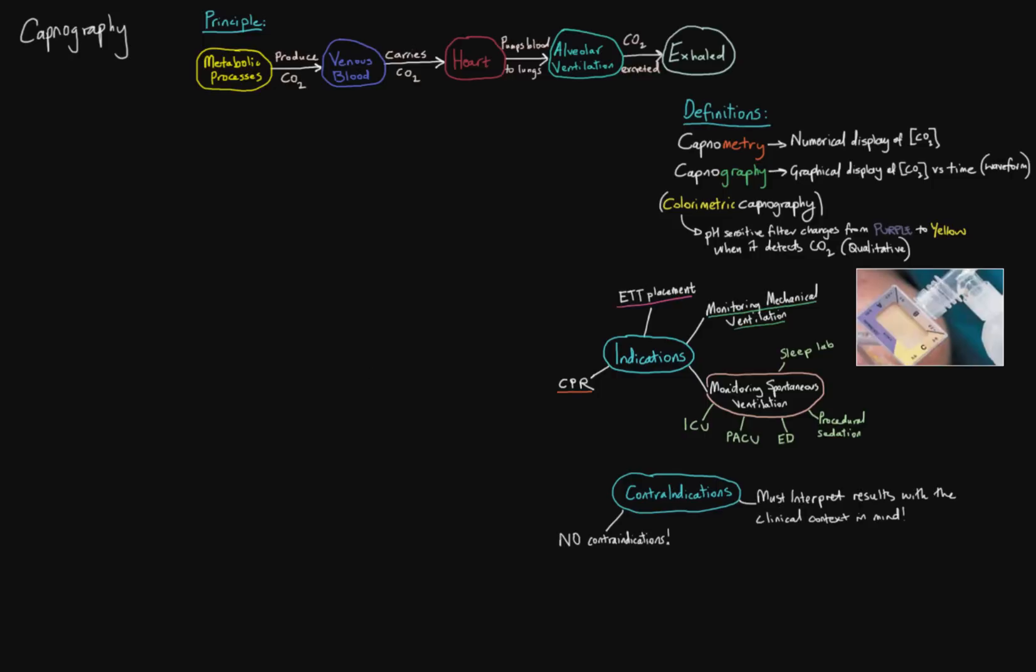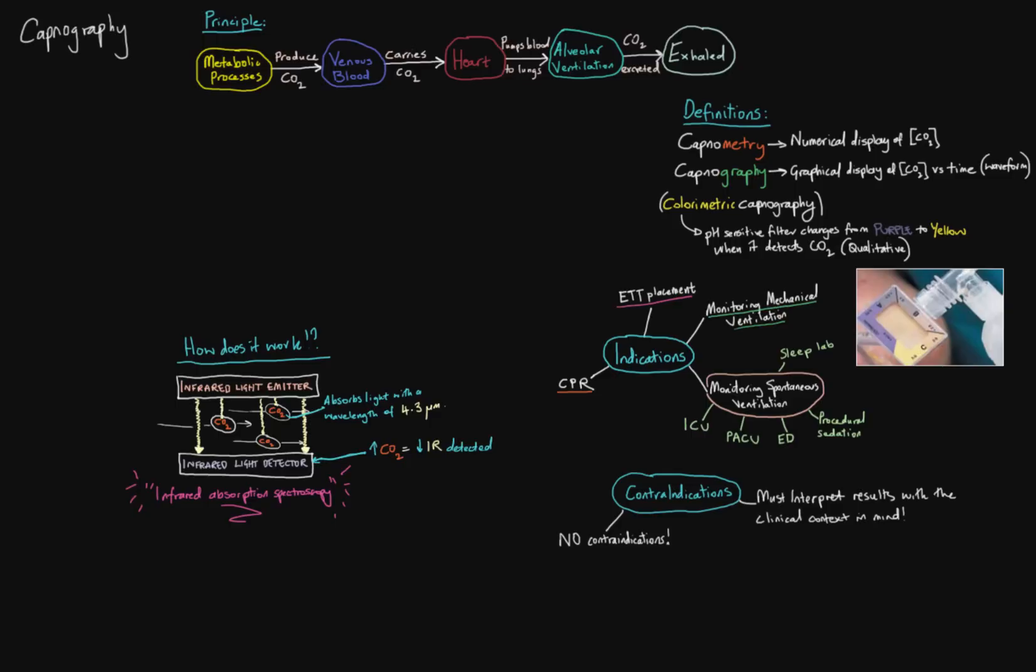So now that we've talked about some of the contraindications, how does it work? How do we actually measure CO2 in expired breath? I'm not a physics major by any means, but here's the basic principle of it. It's something called infrared absorption spectroscopy, which is a long winded phrase, but it is essentially an infrared light emitter will pass a certain wavelength of light, which happens to be 4.3 microns, and that gets picked up by an infrared light detector.